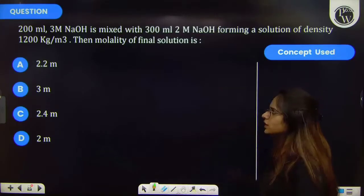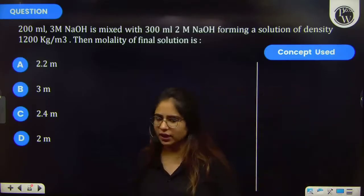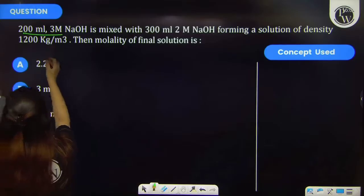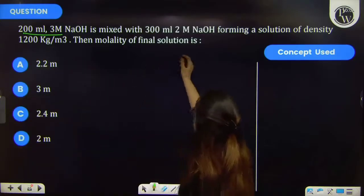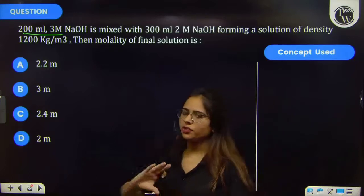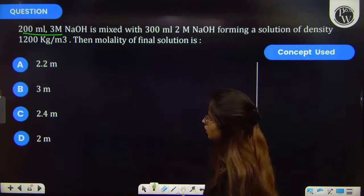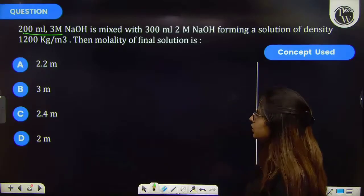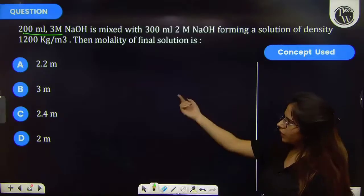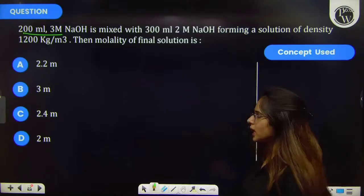Then the molality of the final solution is - you have NaOH given, that is also a different solution. One is 200 ml 3 molar and the next is 300 ml with 2 molar. After that, the solution will be mixed, having a density of 1200 kg per meter cube. You have to find molality.